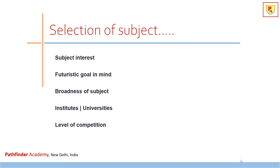The fourth factor is the institute or university you want to join. Suppose you have two options: MSc Biotechnology at a less-known university, or Molecular and Human Genetics at BHU. In this situation, I suggest BHU, because the name of the institution matters. Finally, consider the level of competition — for IITs, your hard work and examination temperament will fulfill your desire. Keep all these parameters in mind when selecting a subject for your MSc program.